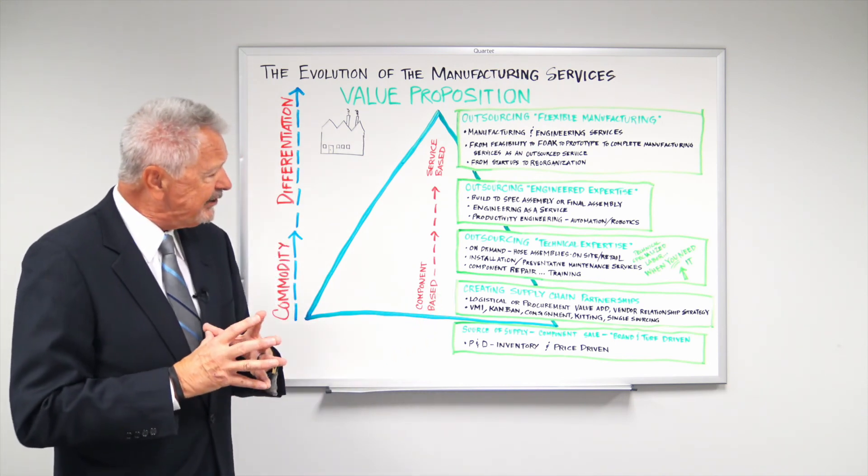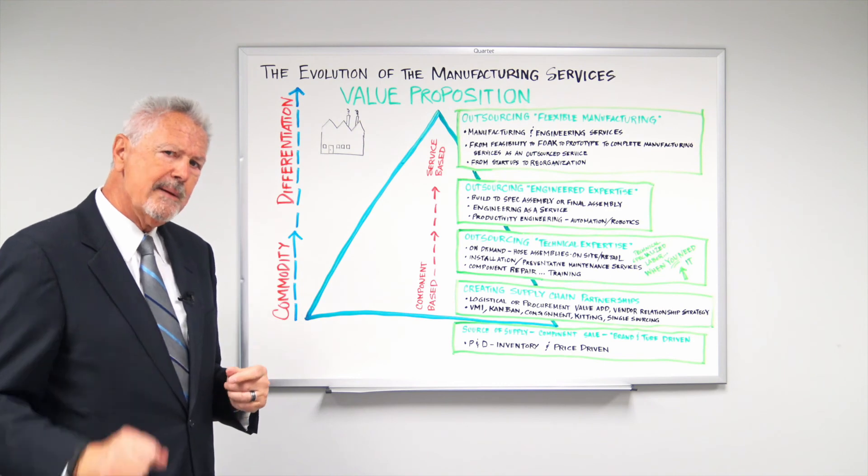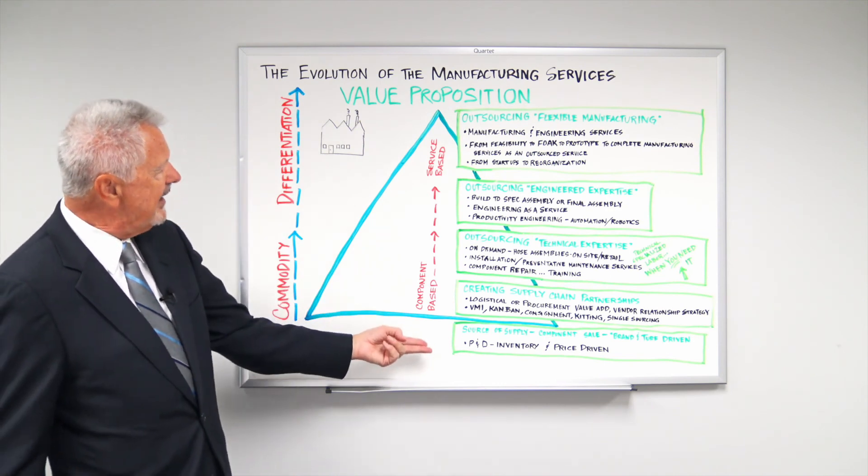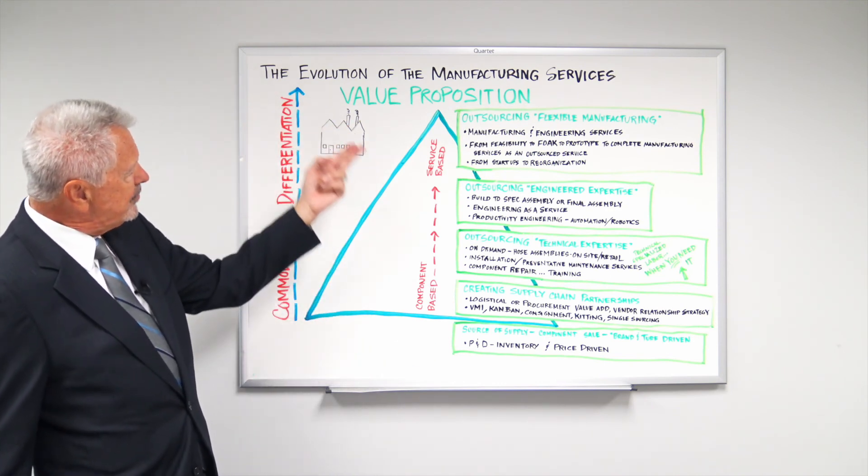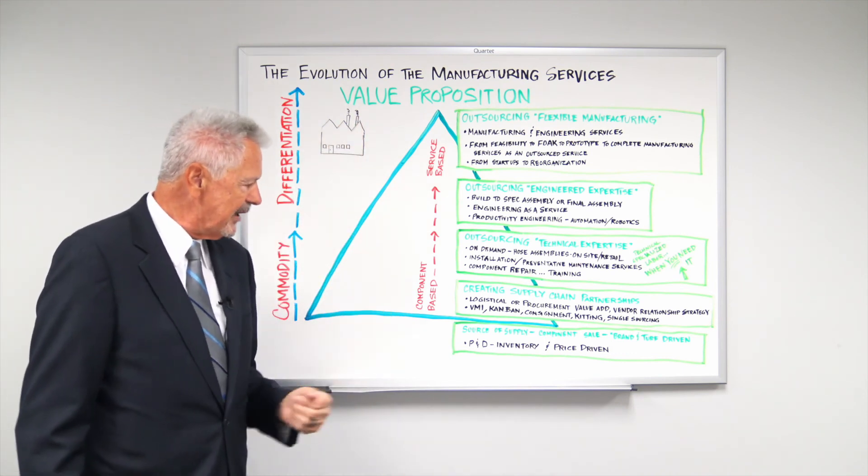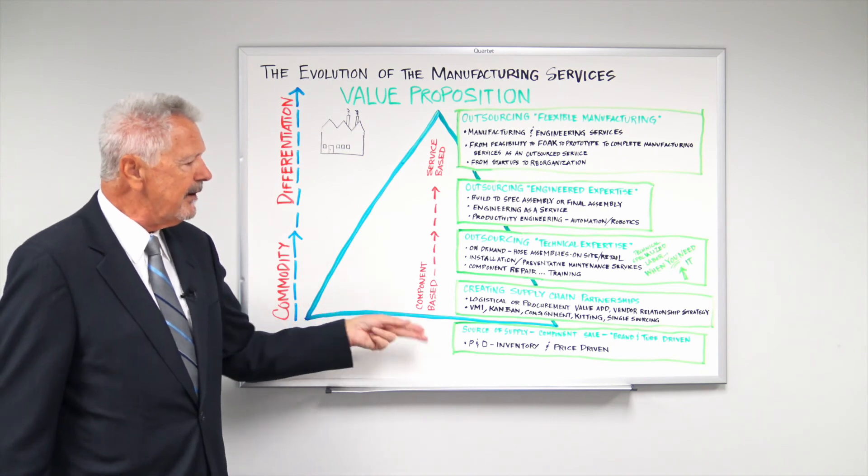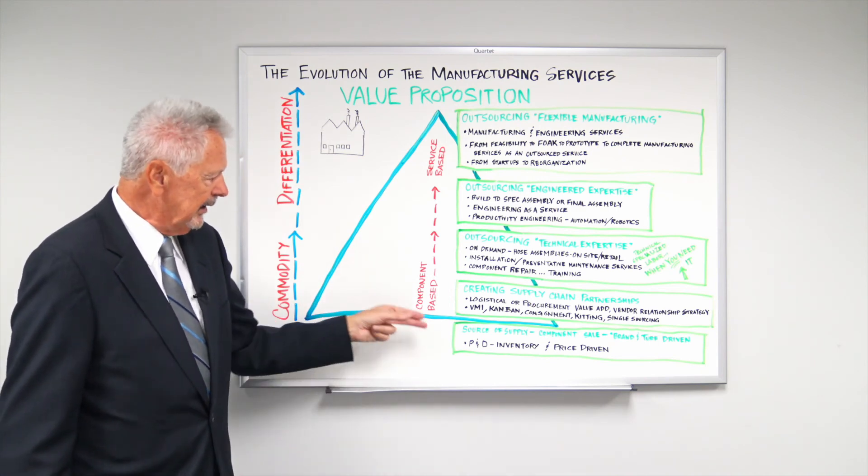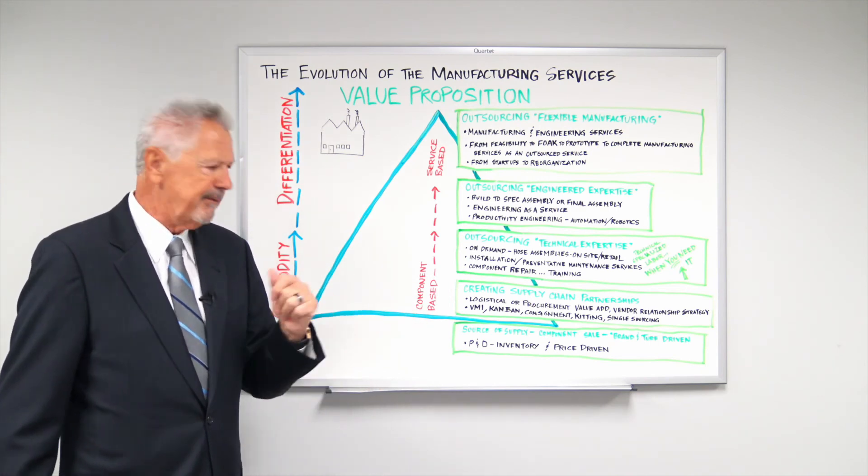So let's kind of take a step back in what I like to call the Wayback Machine and talk about that evolution. The evolution of the service business as it pertains to serving manufacturing. So it began with a very simple business model. It's what I call the brand and turf model.